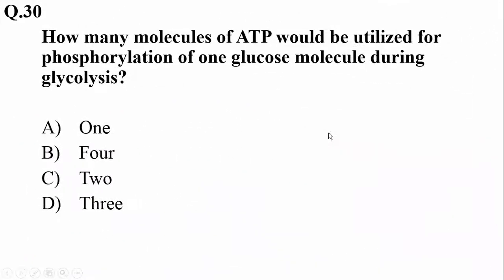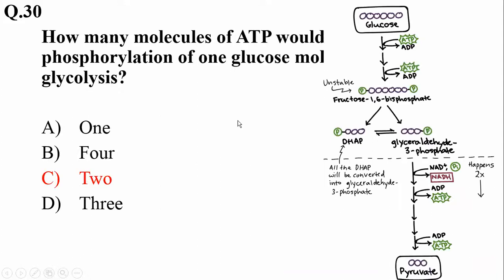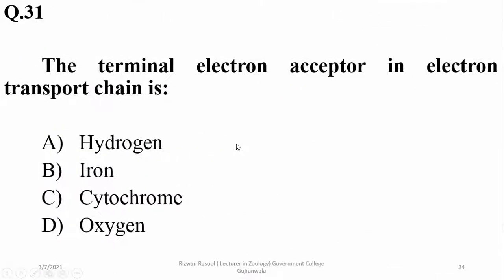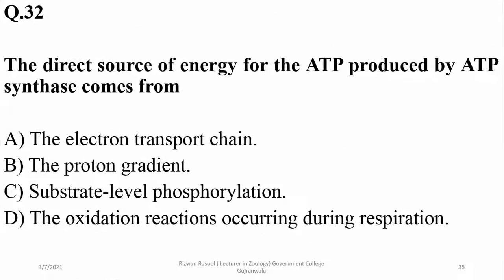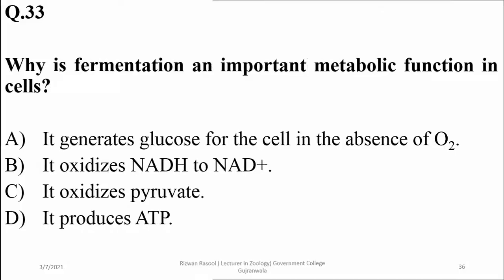How many molecules of ATP would be utilized for phosphorylation of one glucose molecule during glycolysis? Two molecules will be required in the preparatory phase. The terminal electron acceptor in the electron transport chain is oxygen, while the direct source of energy for the ATP produced by ATP synthase comes from a proton gradient.